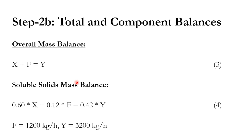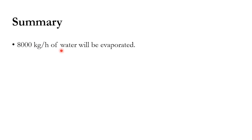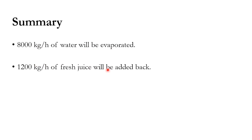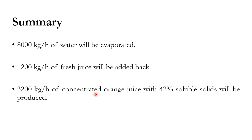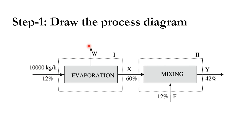In numerical two we applied overall mass balance and component mass balance across two systems. The results: 8,000 kg/hr of water evaporated, 1,200 kg/hr of fresh juice added back, and 3,200 kg/hr of concentrated orange juice at 42% soluble solids produced from 10,000 kg/hr of feed.